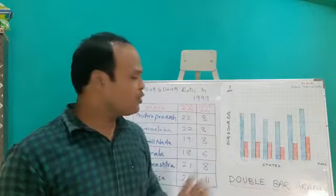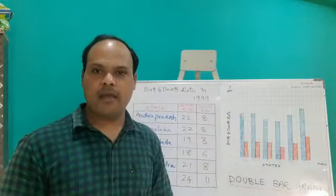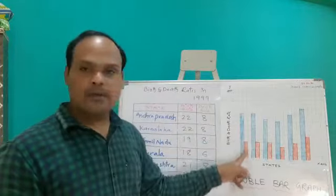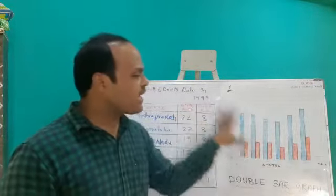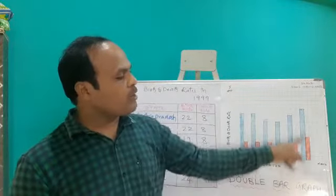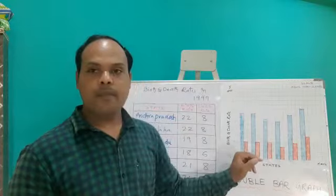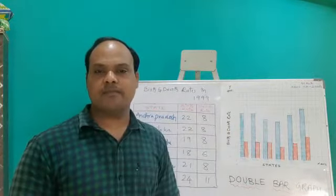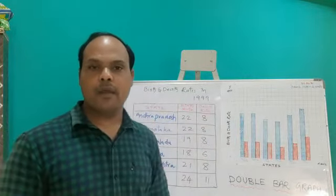And suitable scale should be adapted to draw the double bar graph. Then double bar is useful to compare the two items here, birth rate and death rate. By seeing this graph, I can say that the birth rate is more in Orissa and death rate is less in Kerala. We can compare birth rate and death rate. This is one of the type of bar graphs.